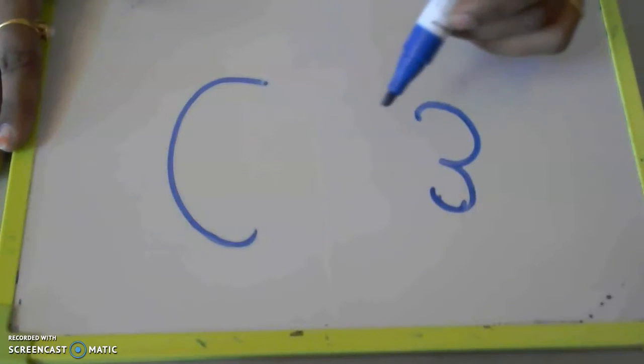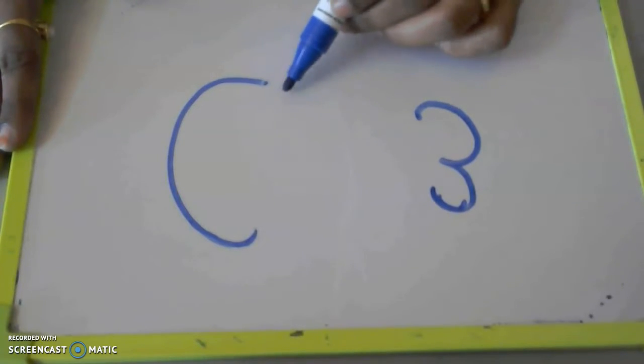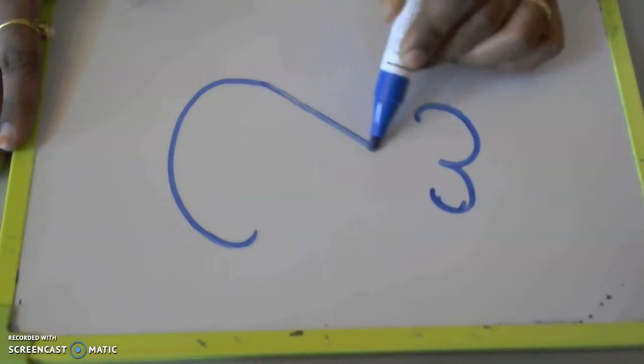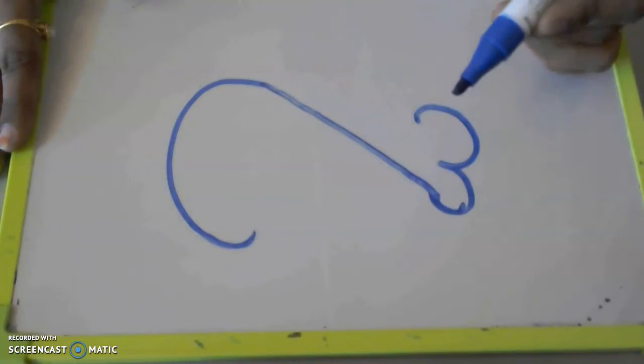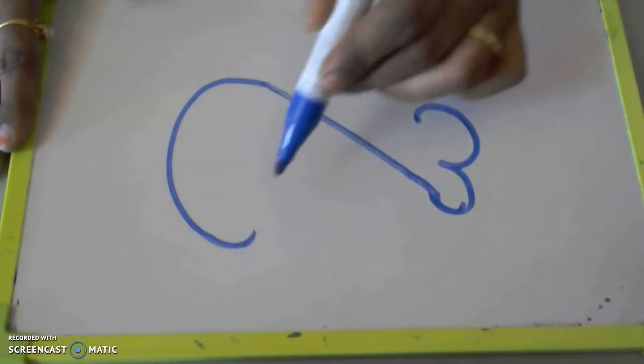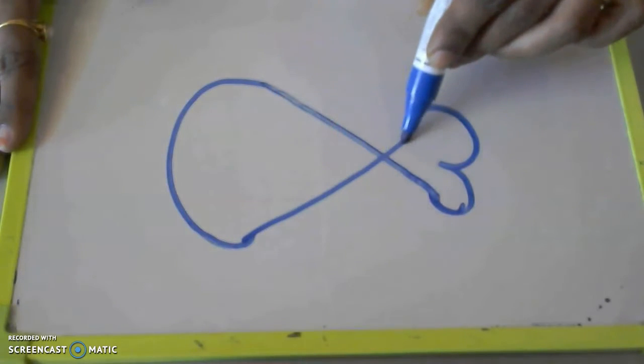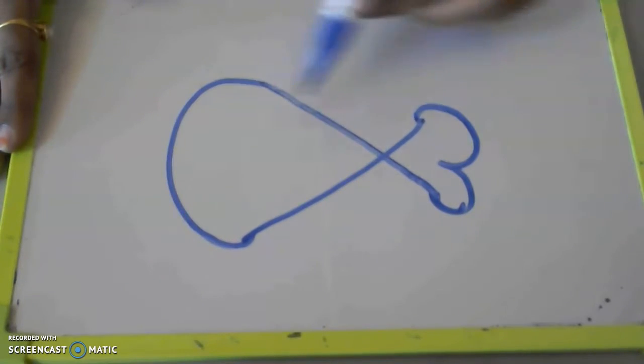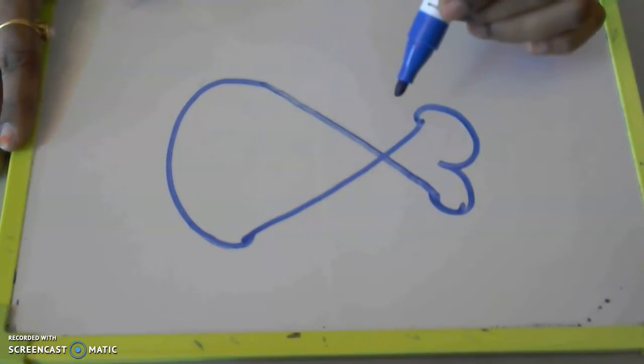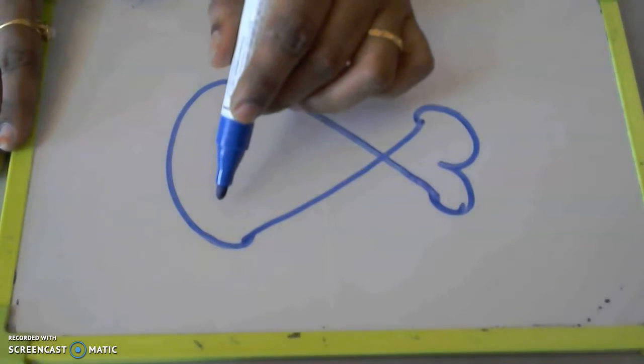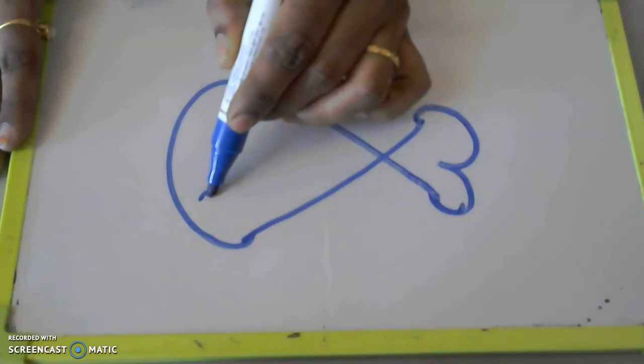So you can draw a slanting line from this down to up. Same way, you can draw one slanting line from this up, curve till down. What do you find here? This is a what? Fish.